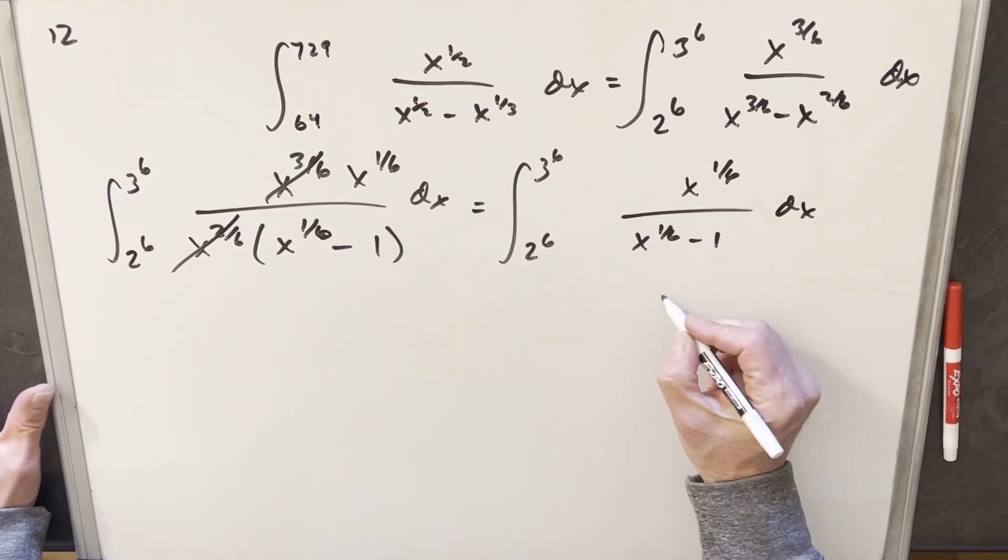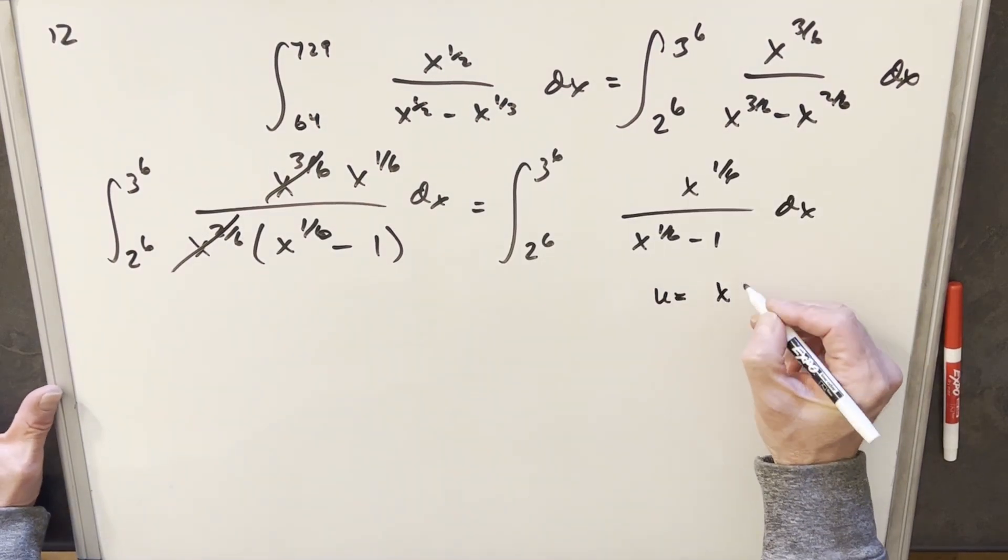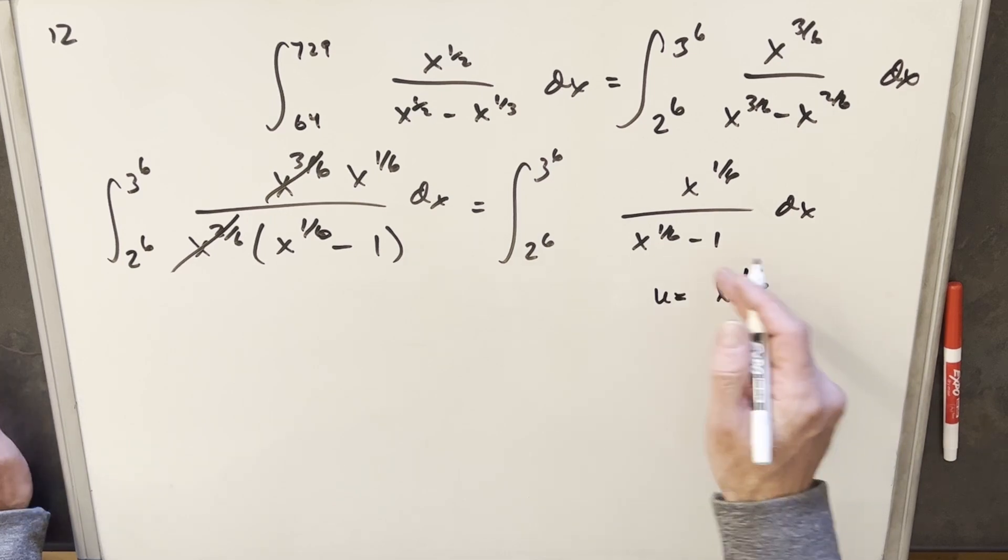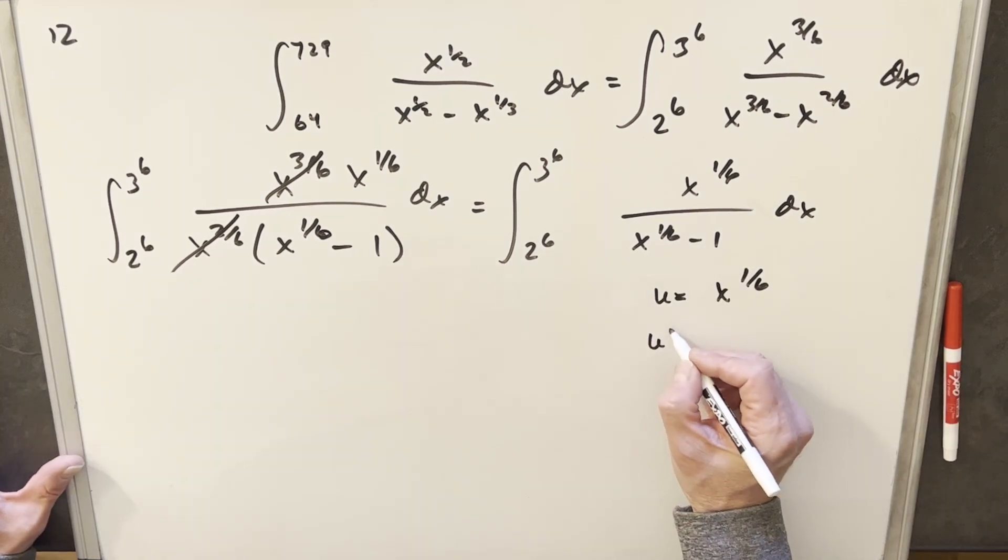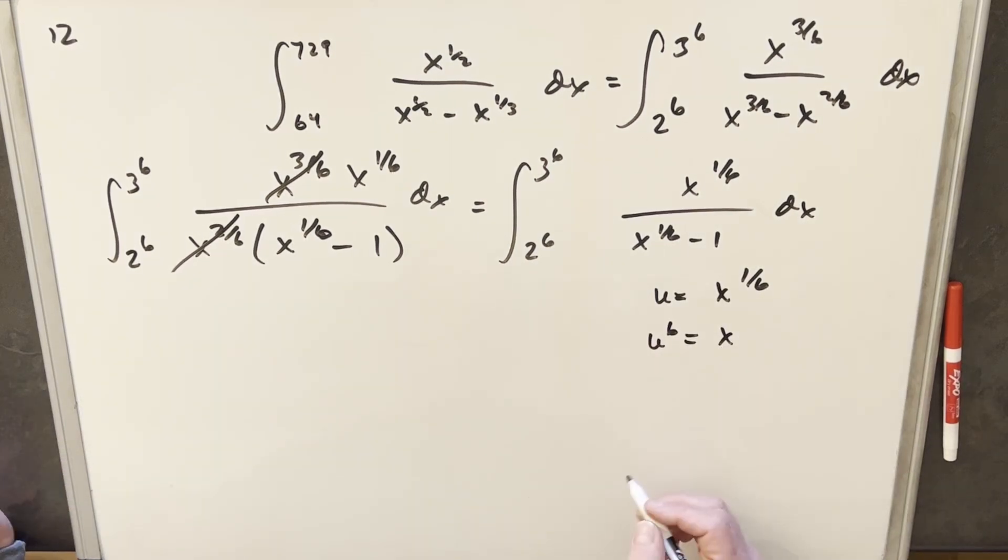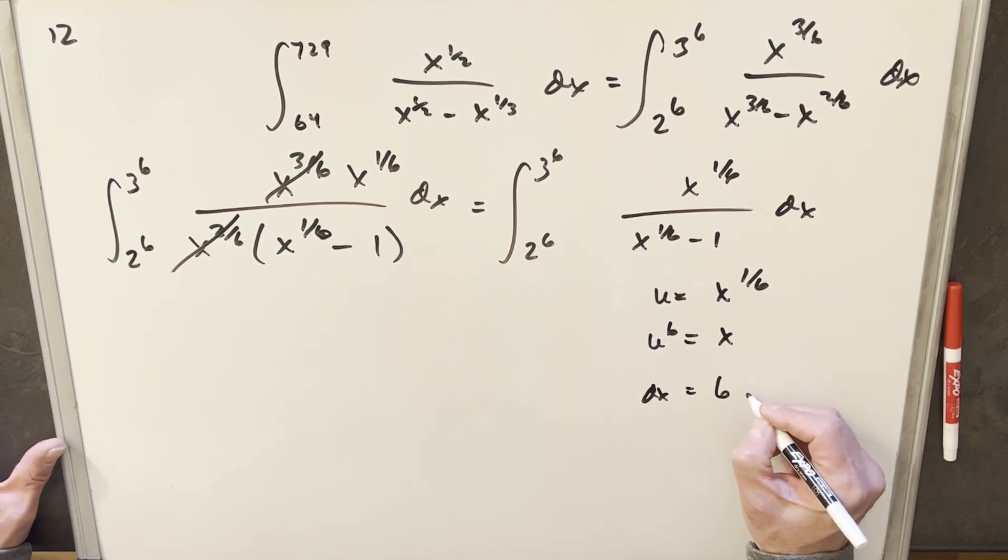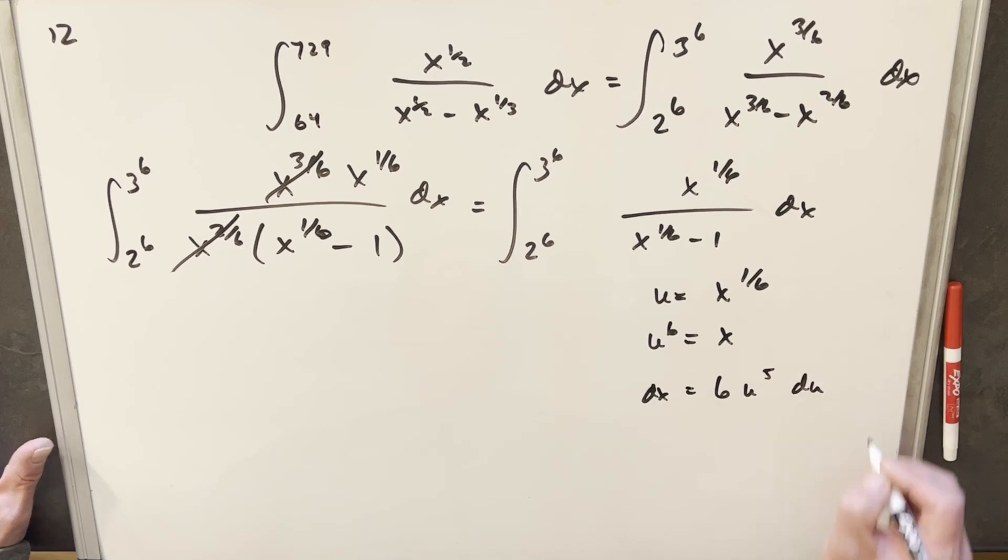Okay next I'm going to do a u substitution. I'm going to call my u just x to the 1/6. Before I take my derivative, let's look at u to the 6th is going to be x. So if we take a derivative, we're going to have dx equals 6 u to the 5th du.